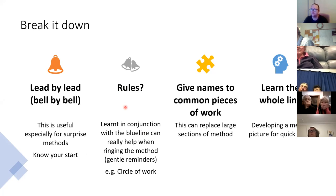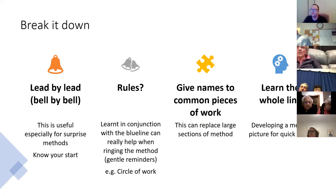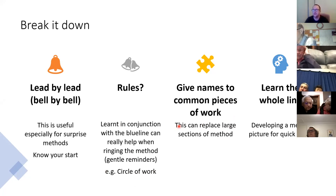There are also rules we can generate from the grid. For example, we might know we have to dodge when the treble's leading — that's one rule we can generate from the blue line, and it can be a general reminder: when we're ringing and we hear or see the treble leading, we know we have to dodge. We can also look at the blue line and identify common pieces of work, give them names, and group bits together. But I think the blue line is most important for learning the whole line — developing a mental picture you can refer to whilst ringing.